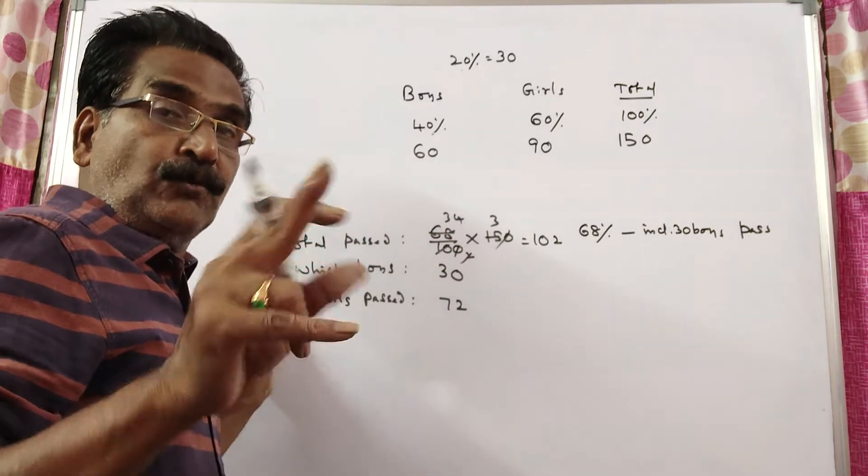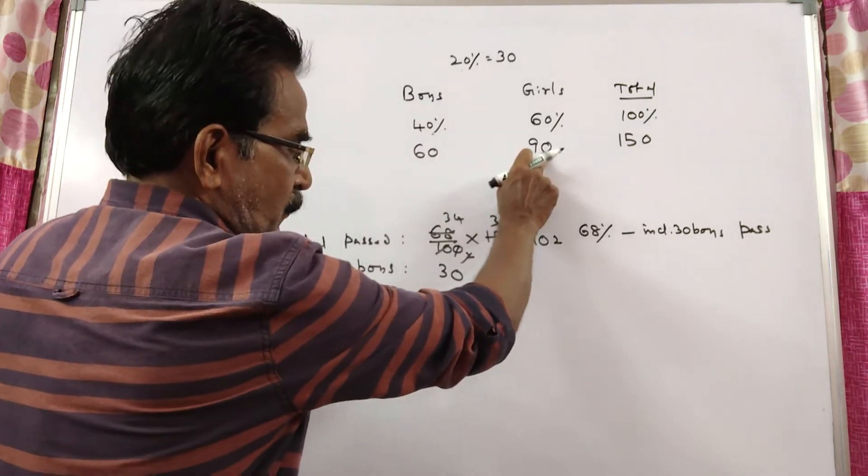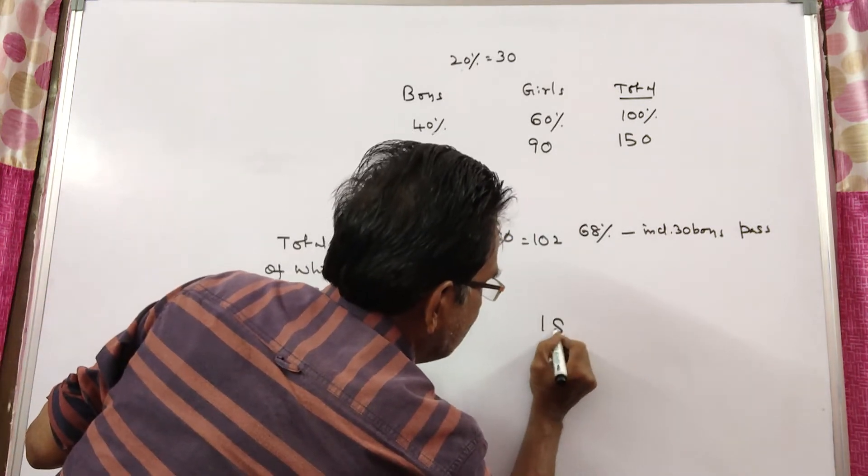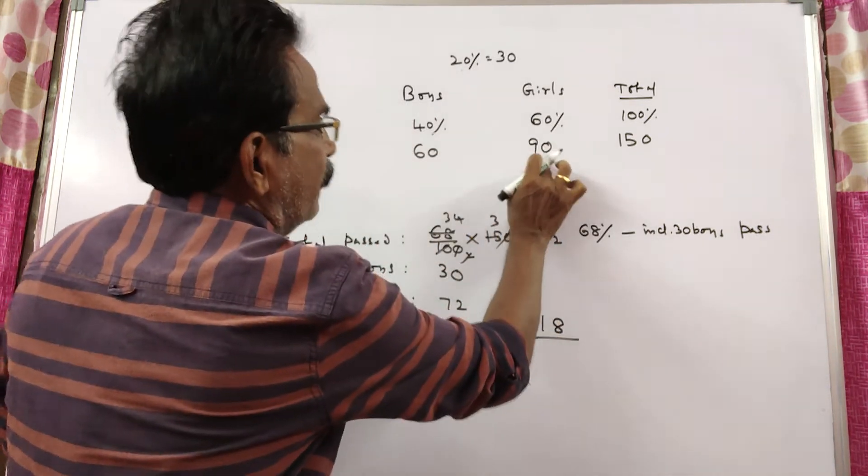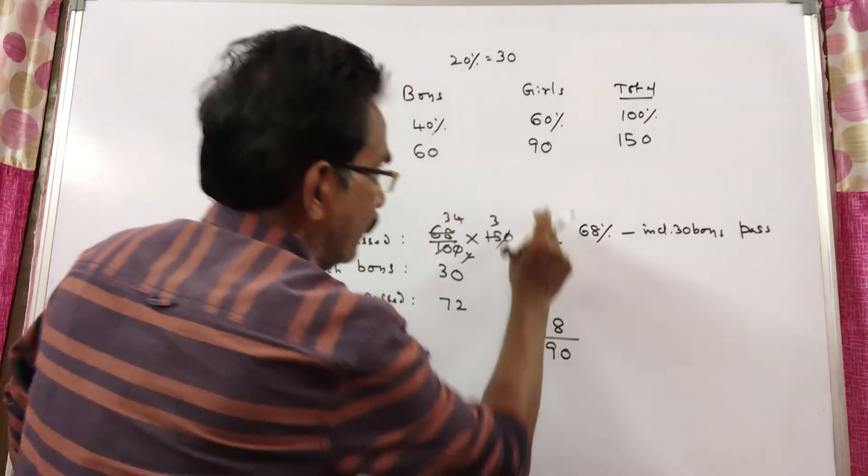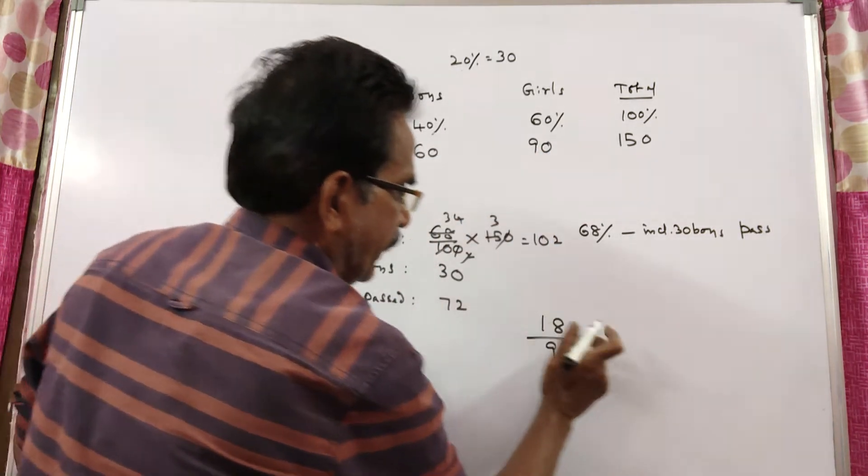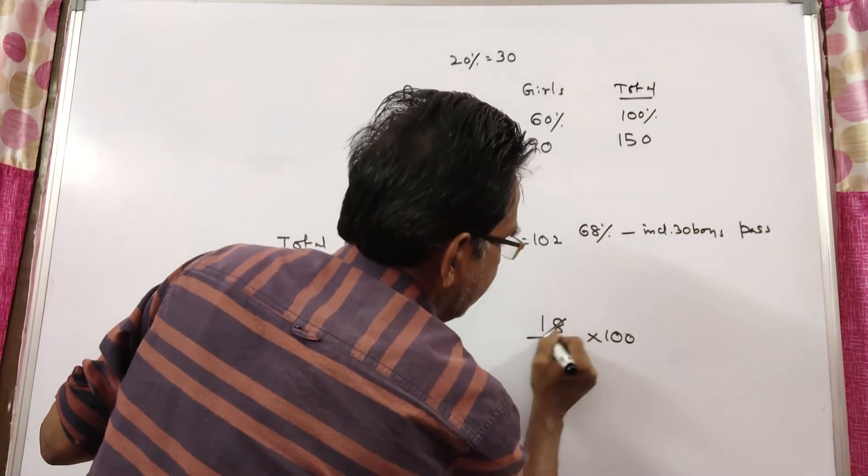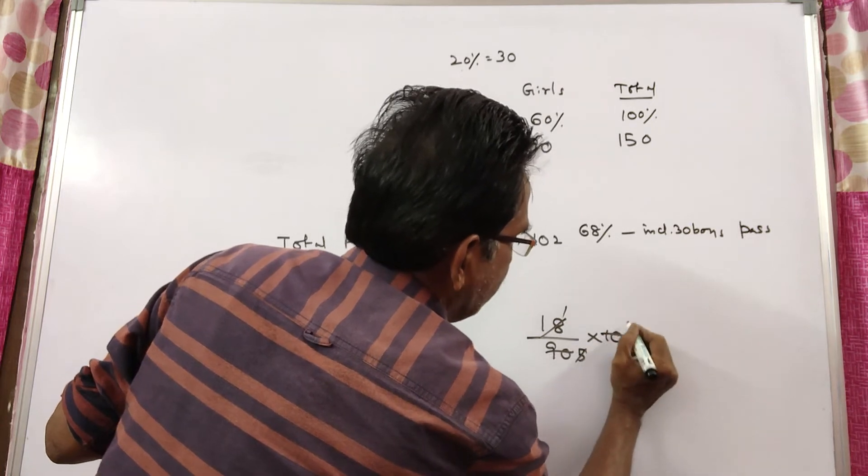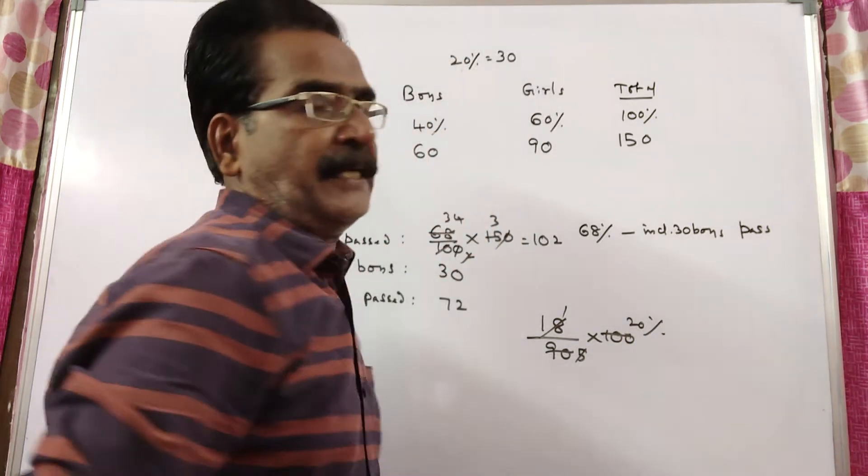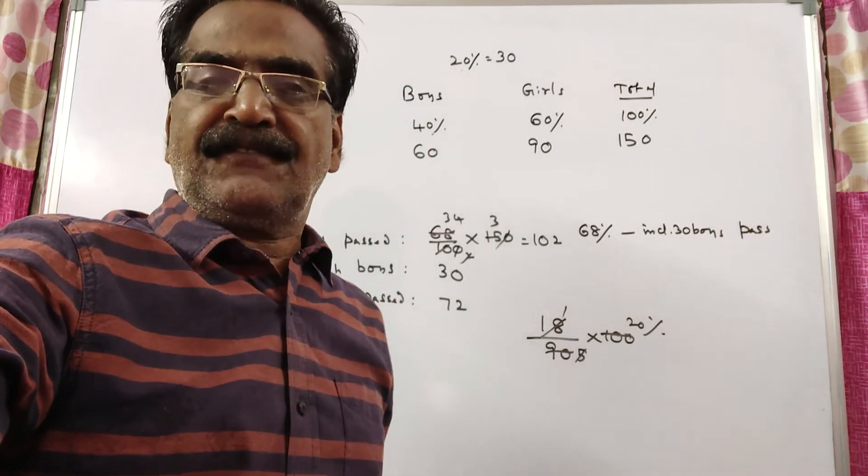We want the girls who do not pass the exam. 18 girls do not pass out of 90. 90 minus 72 is 18. Calculating the percentage: 18 into 90, which gives us 20 percent of the girls do not pass the test.